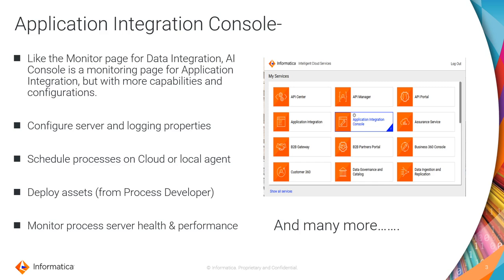For example, not just monitoring your processes or job runs, you can also configure server and login properties, be it on cloud or on agent. You can handle both, and you can also schedule processes on cloud or on a local secure agent. You can also deploy assets from Process Developer in the form of a BPR file into Application Integration from CI console, and monitor process health and performance with full analytics. AI console has many more capabilities, which we'll cover in the screen share session.